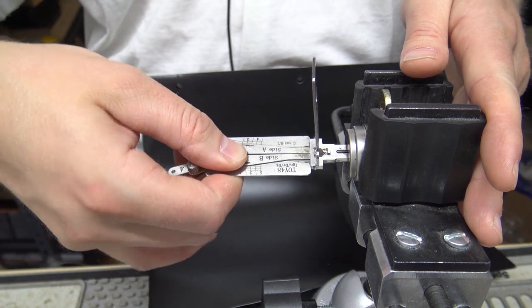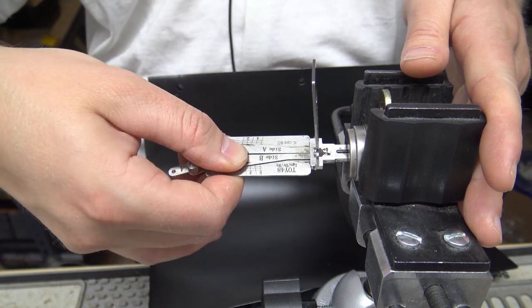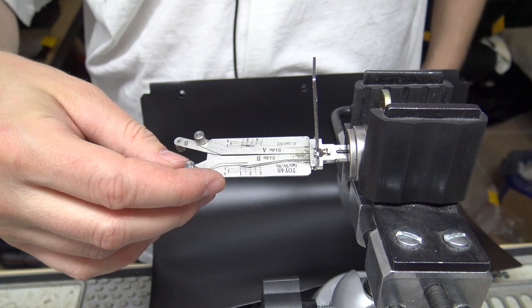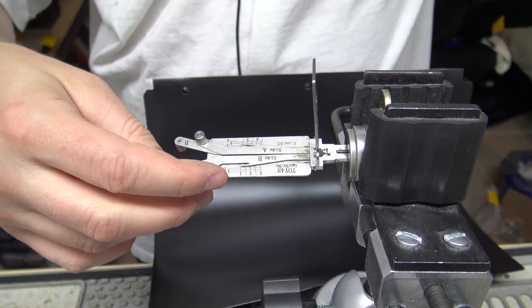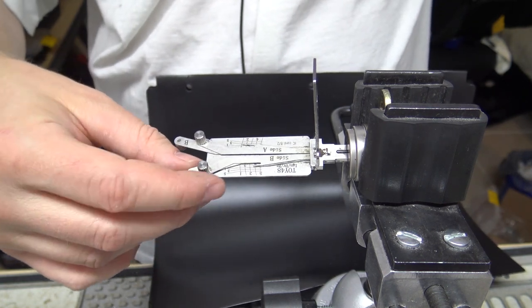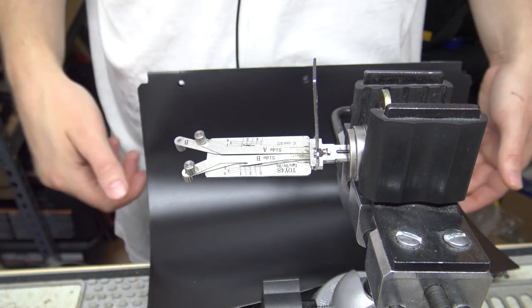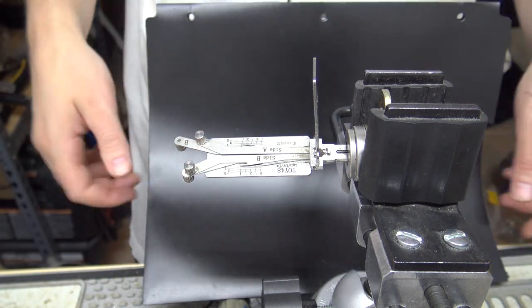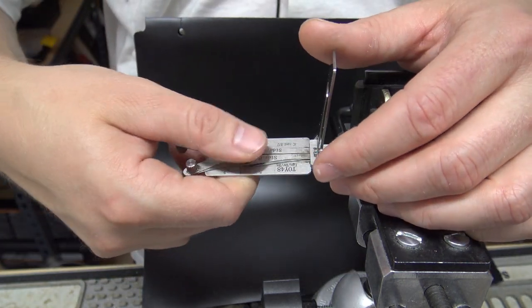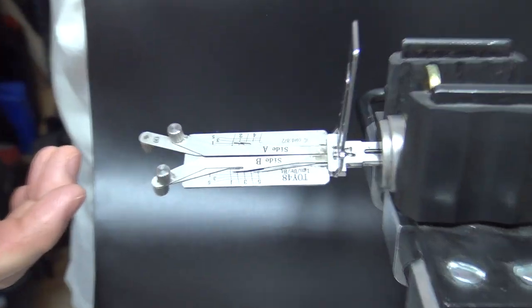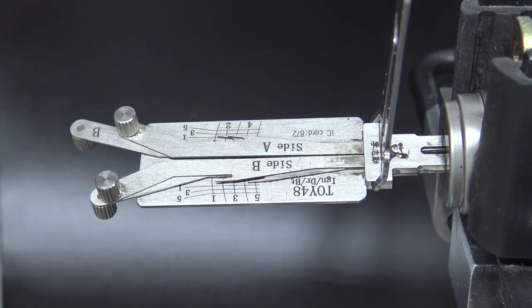and two lifters per track is what it amounts to, and the way this is configured in my vise here, we have one, three, and five going down on both tracks, and then two and four going up on both tracks, which you can very easily feel. And then we'll just need to pick it twice, and we'll be able to actually read it.